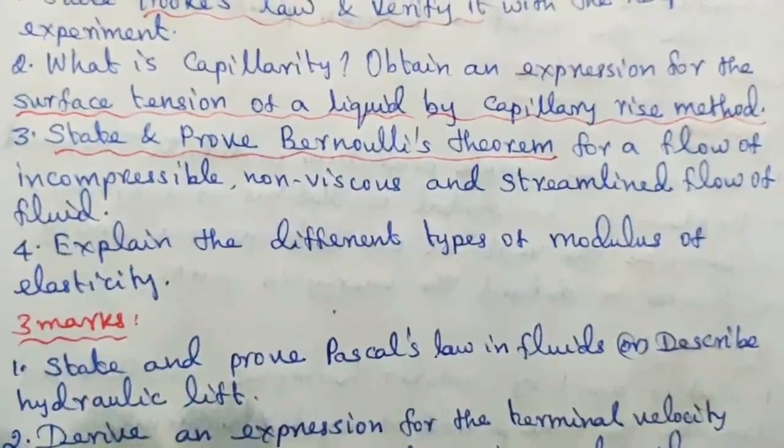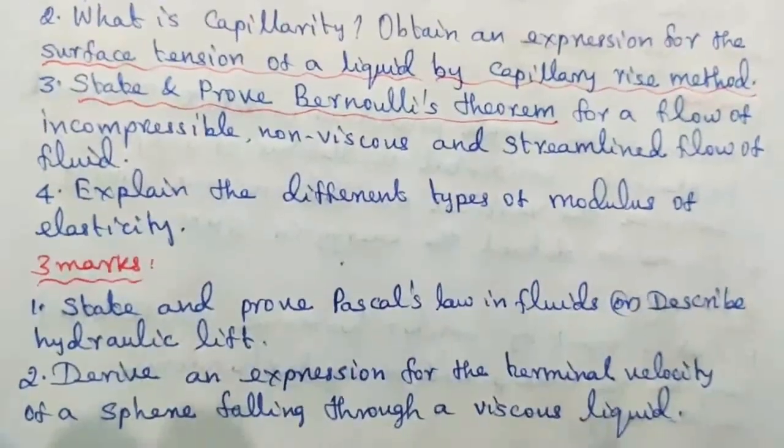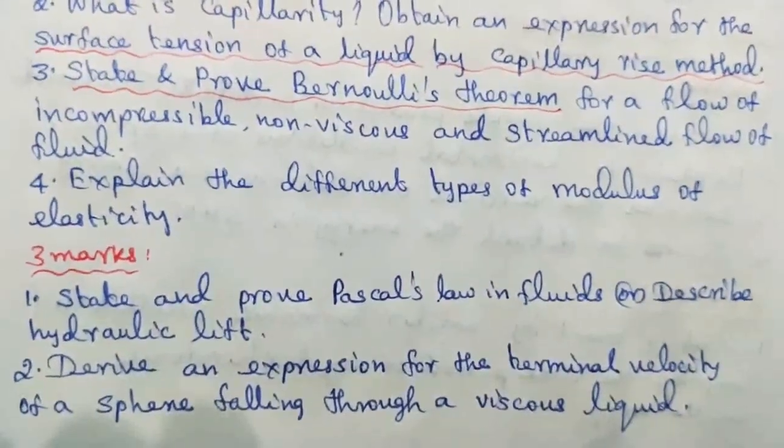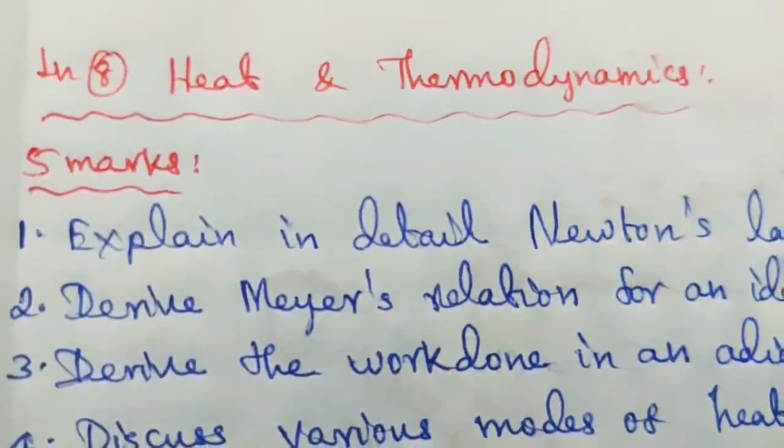This is also called as force multiplier. Question number 2: Derive an expression for the terminal velocity of a sphere falling through a viscous fluid. Lesson 8, Heat and Thermodynamics, 5 marks.